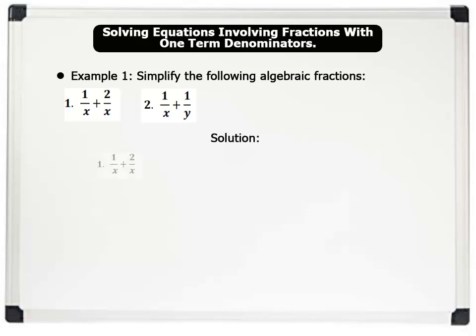Solution 1: 1 over x plus 2 over x. Notice that both fractions have the same denominators, so we simply add up their numerators. So, 1 plus 2 over x equals 3 over x.